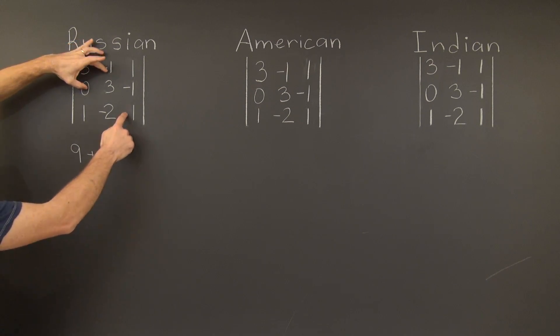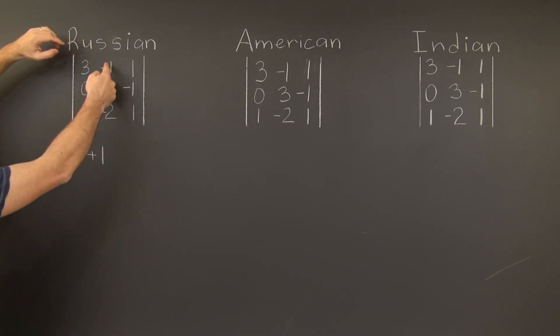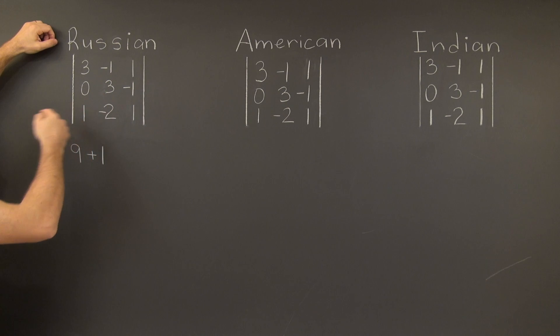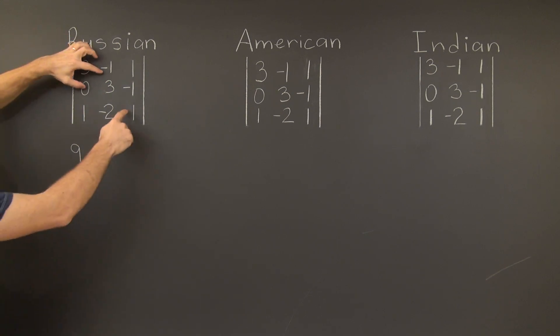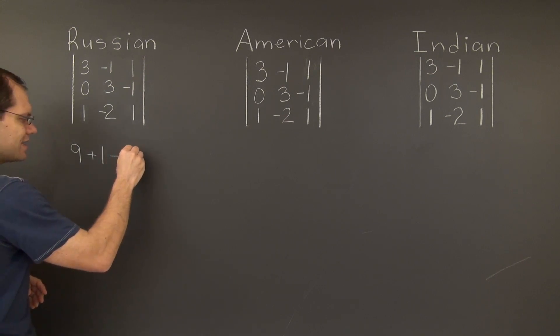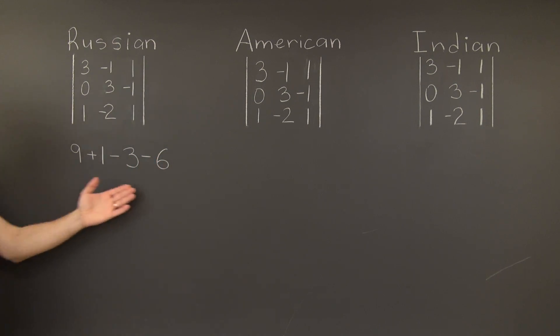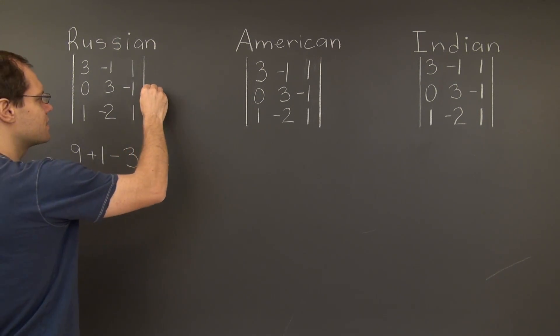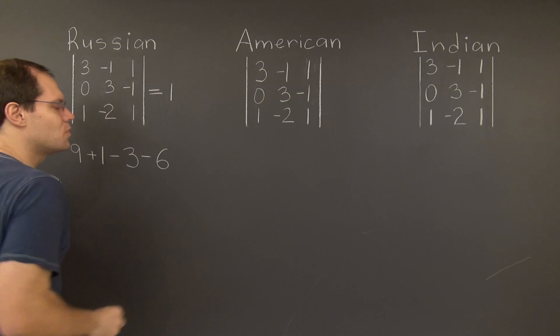And the final one comes from this triangle that has a base parallel to the opposite diagonal and this triangle will contribute 0 because there is a 0 in the mix. So the negative terms are negative 3 and negative 6 and the result is 1. This determinant equals 1.